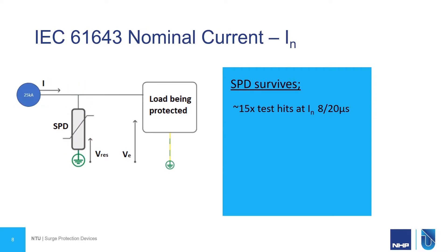IN is the nominal current rating of an SPD. There is a test procedure with this, but to summarize, it basically means that the SPD can be tested to this current 15 times and the SPD itself survives. Note that this uses an 8 over 20 microsecond waveform, so this is a Type 2 test.